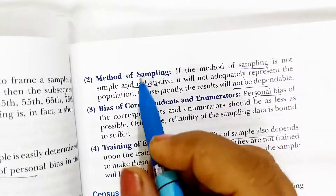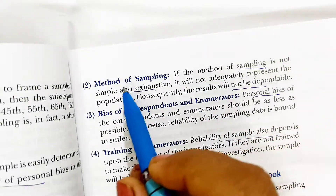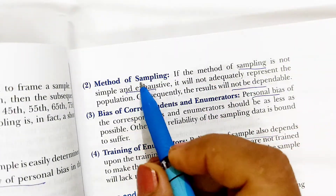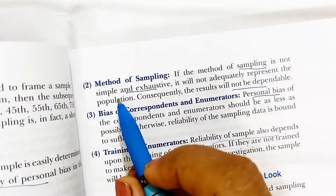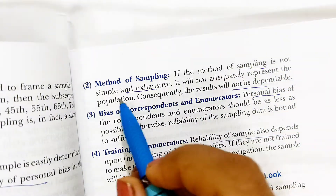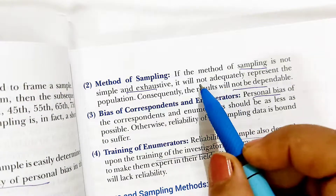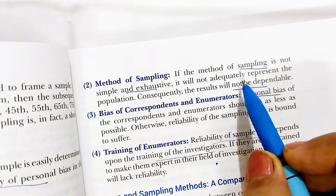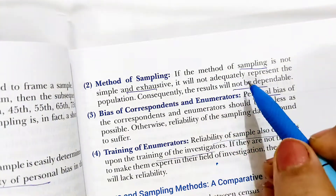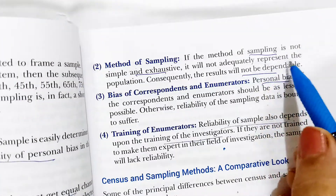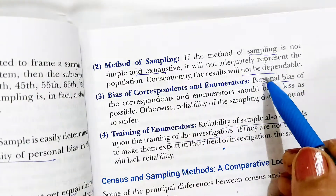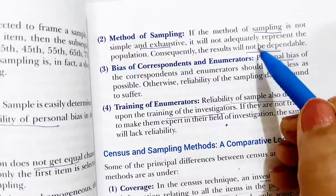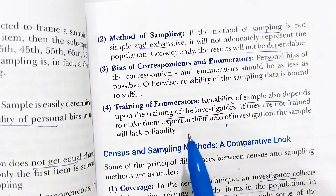Second, reliability depends upon the method of sampling. If the method of sampling is not simple and exhaustive, but very complicated, then it will not represent the whole population and the result will not be very reliable.